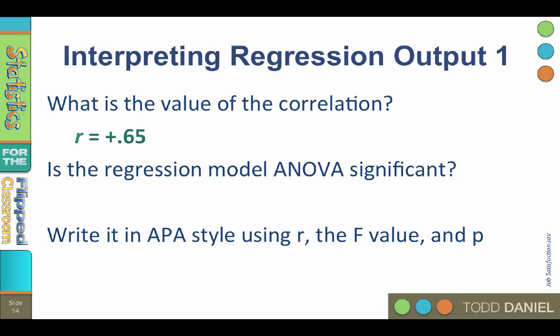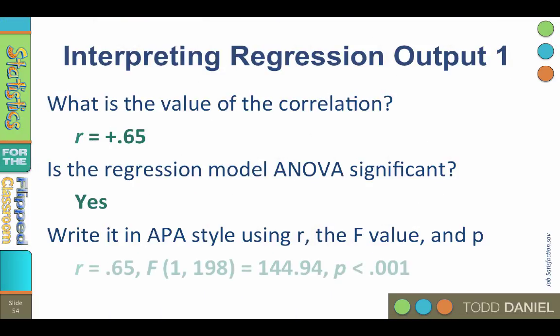Is the regression model ANOVA significant? Yes it is. Write up the regression model ANOVA in APA style using r, the F value, and p. Your answer should look like this: r equals 0.65, F with 1 and 198 degrees of freedom equals 144.94, p less than 0.001.